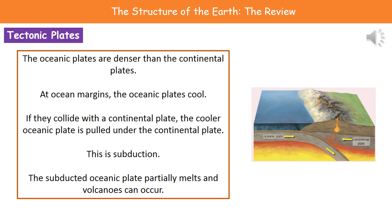This process is called subduction. As that oceanic plate is pulled under the continental plate, the oceanic plate begins to melt slightly, and that's where we start to see things like volcanoes occurring. Remember that the oceanic plates are denser than the continental plates, so they go under the continental plate at those margins.